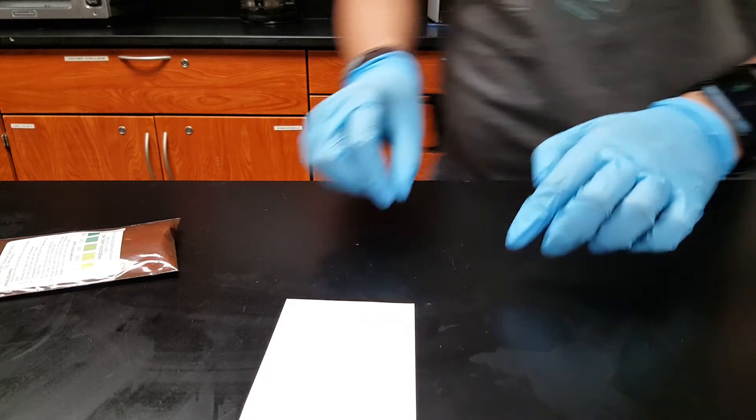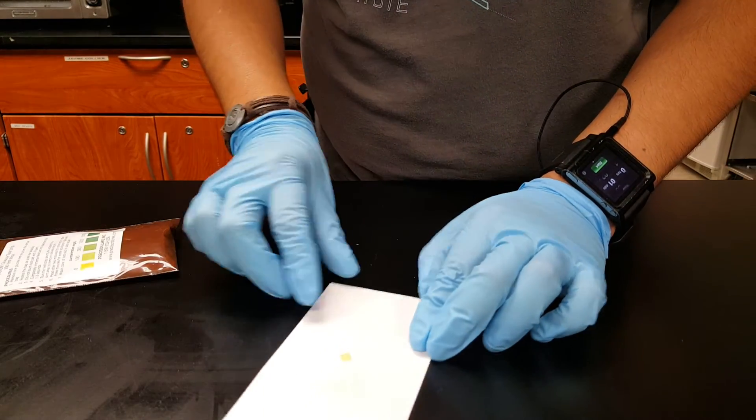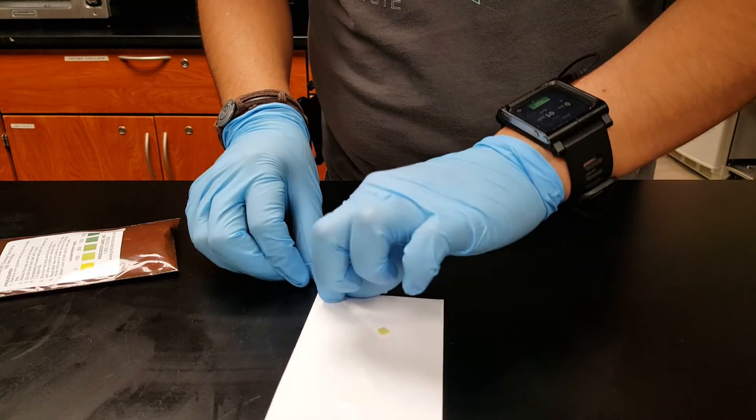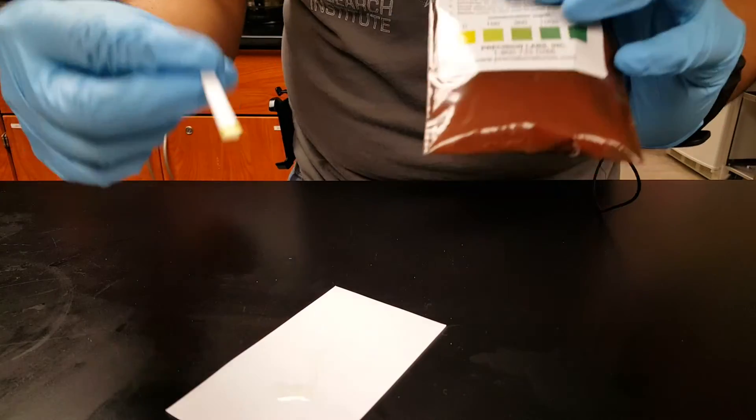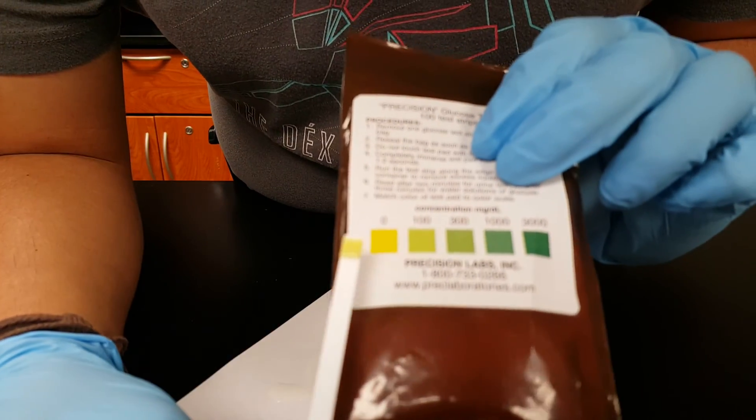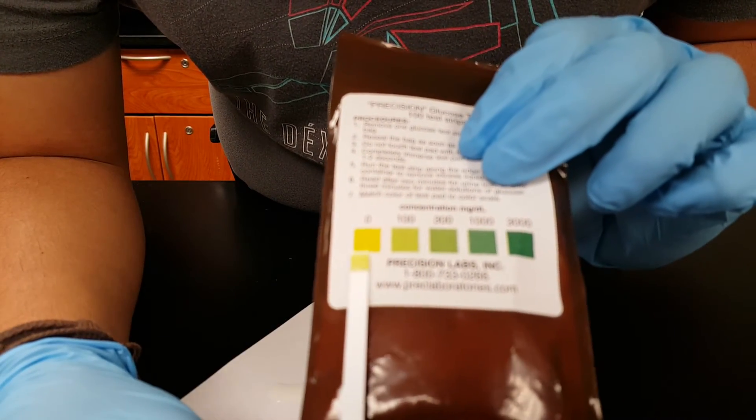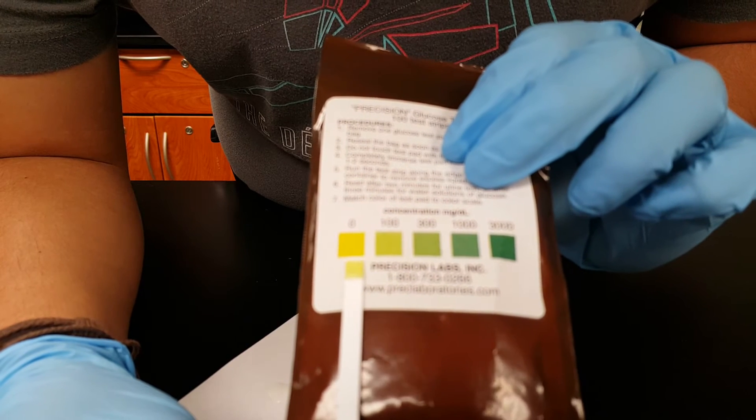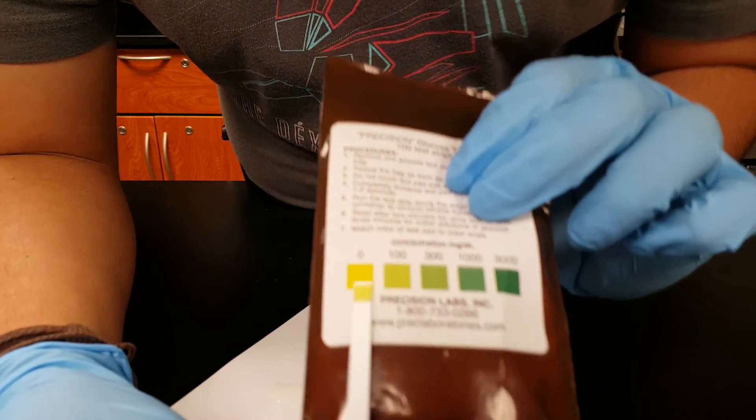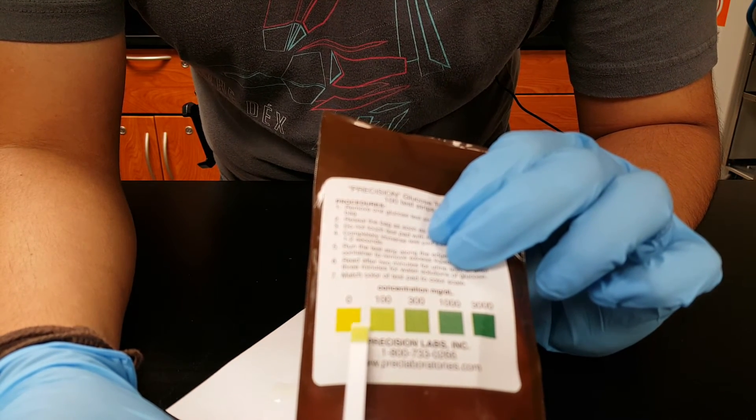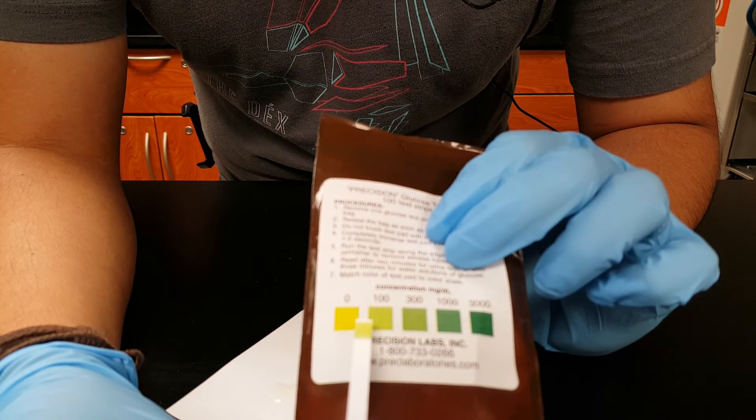All right, after the minute has passed, you're going to take your strip and you're going to show what it looks like when compared to the meter here, to the graph. And you can see that it's somewhere between zero and a hundred. So there's some activity, but there's not a lot, which makes sense because this was a very cold temperature.